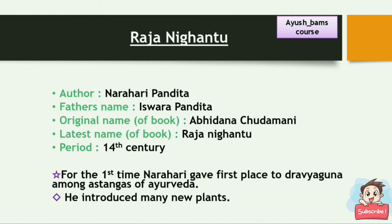Now the detailed explanation of Rajanikandu. The author of Rajanikandu is Narahari Pandita, and his father's name is Ishwara Pandita. The original name is Abhidana Chudamani, and the latest name is Rajanikandu. It belongs to the 14th century. For the first time, Narahari gave first place to Dravya Guna among the Ashtangas of Ayurveda and introduced many new plants. Rajanikandu contains 23 Vargas.